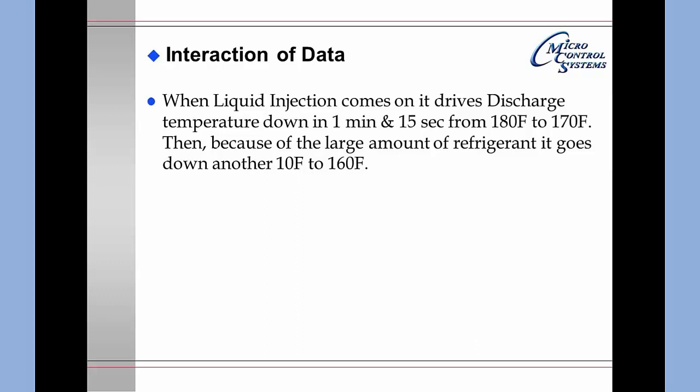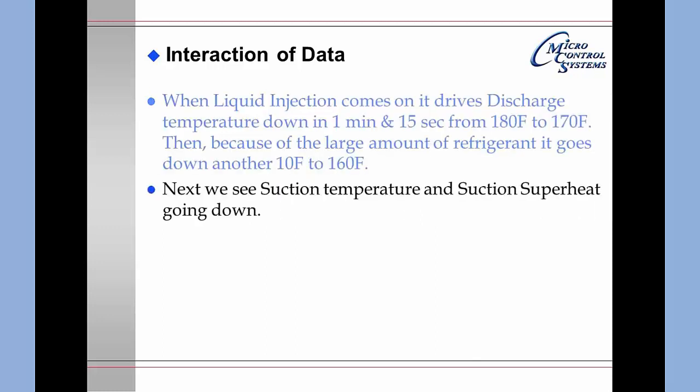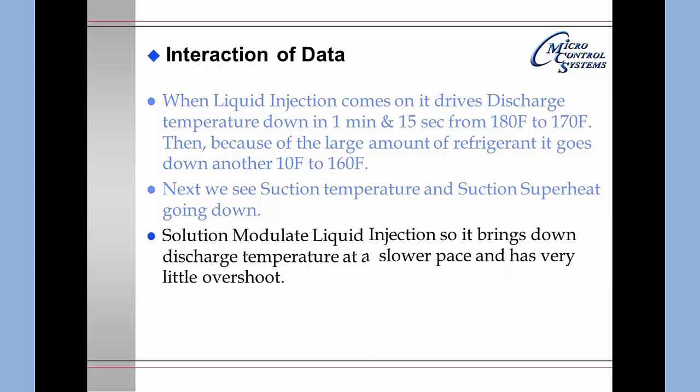Liquid injection should come on and run for 5 to 10 minutes to drive the temperature down 10 degrees, and there should be very little drift once it has reached its goal. The next thing we saw was that the suction temperature and suction superheat are going down. In this particular case there was no throttling mechanism on the liquid injection like there normally is. Rather it was a ball valve that had been installed, and the ball valve was allowing way too much refrigerant when the liquid injection came on to get into the motor.